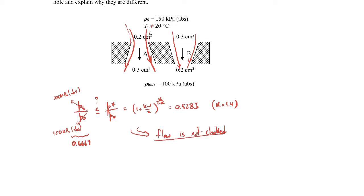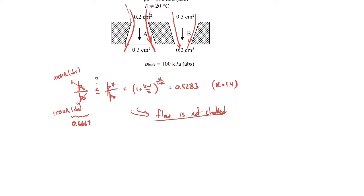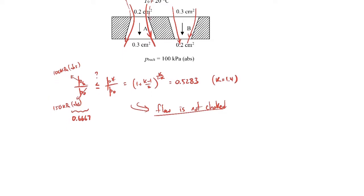Since the flow is not choked, the Mach number at the throat will be subsonic, meaning the pressure there equals the back pressure. To find the mass flow rate, we set it equal to density at the exit times velocity at the exit times the area at the exit. The exit area is 0.2 square centimeters.